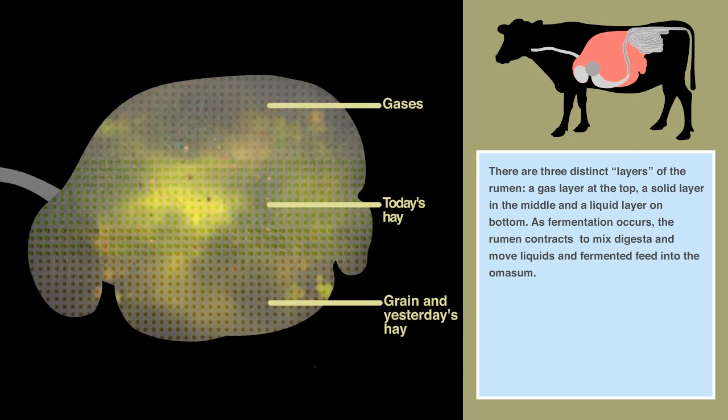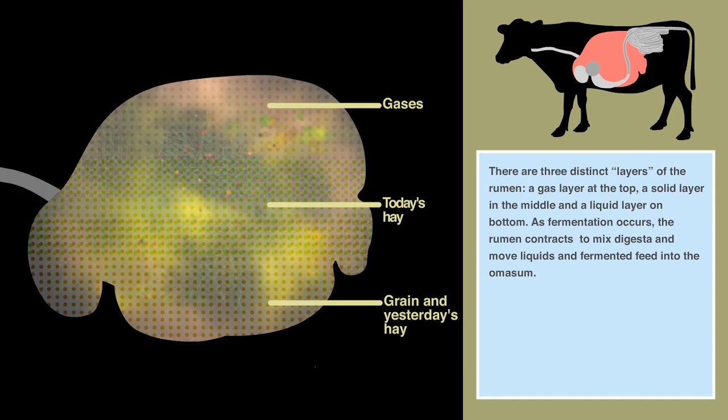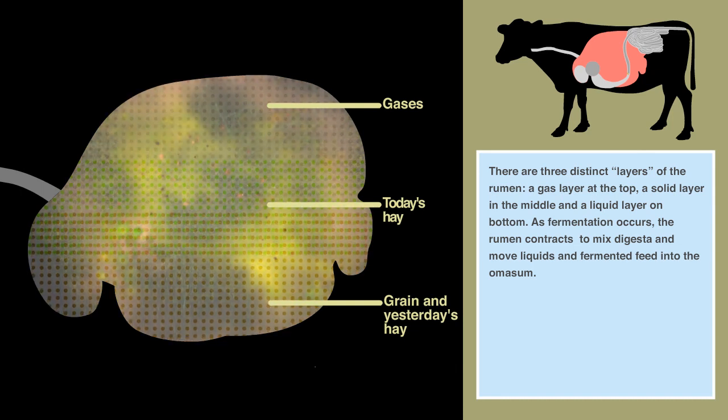As fermentation occurs, the rumen contracts to mix digesta and move liquids and fermented feed into the omasum.